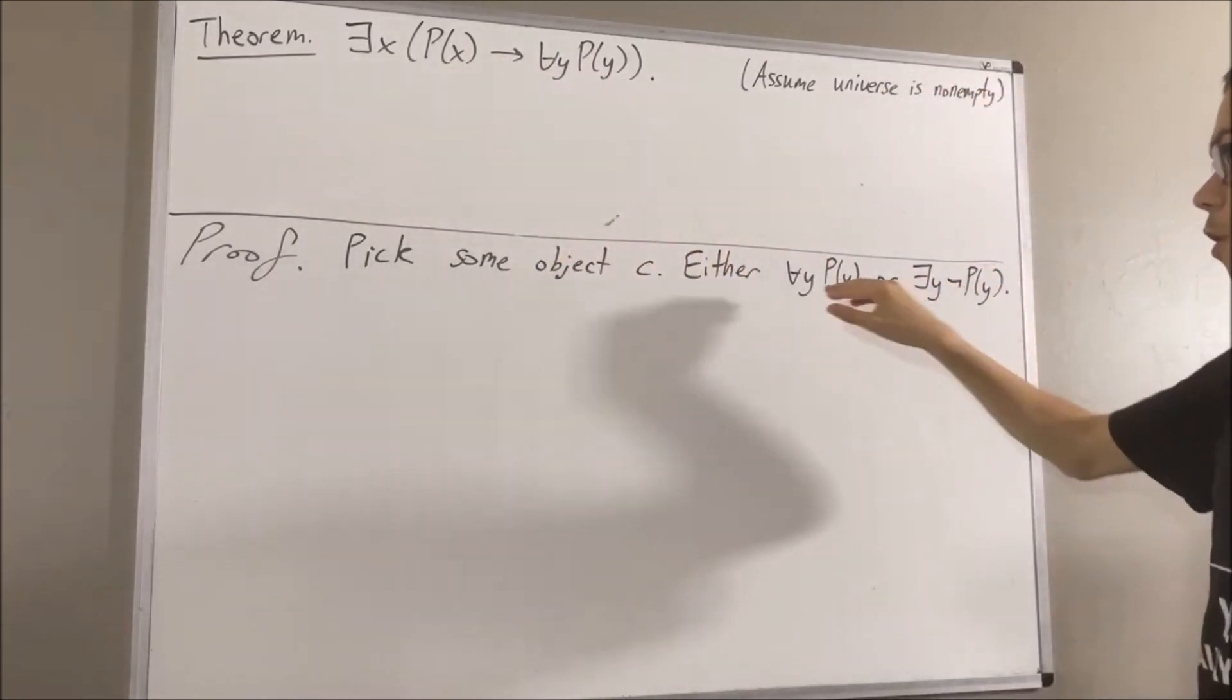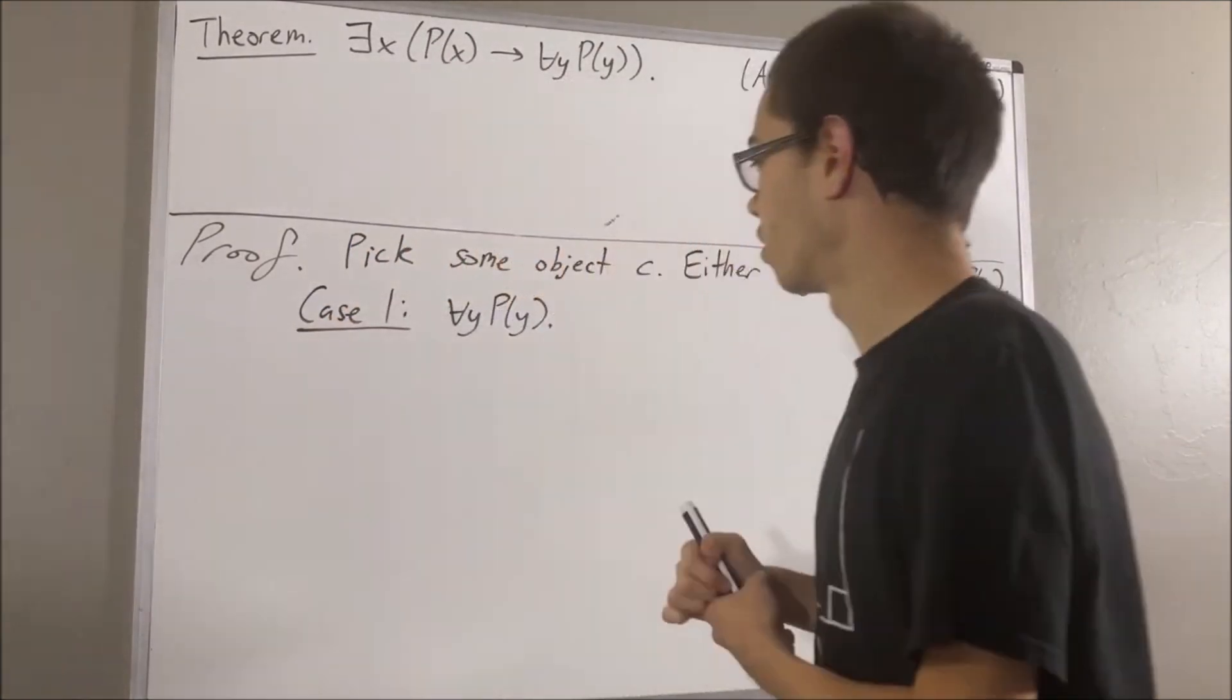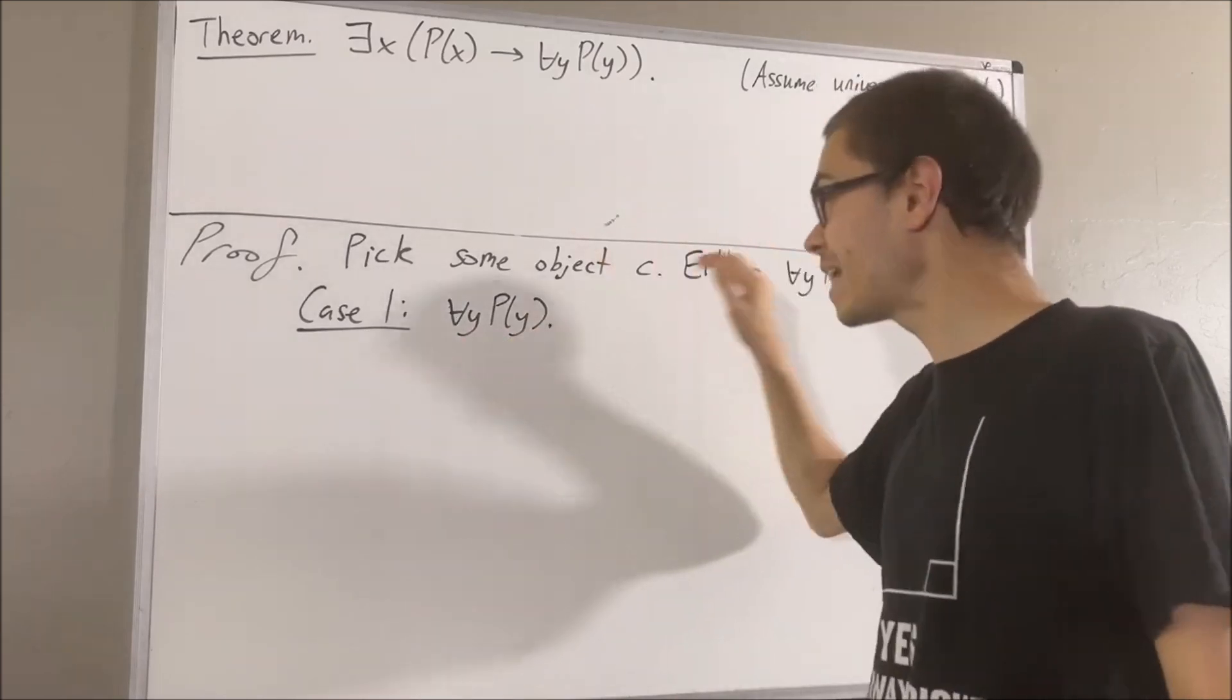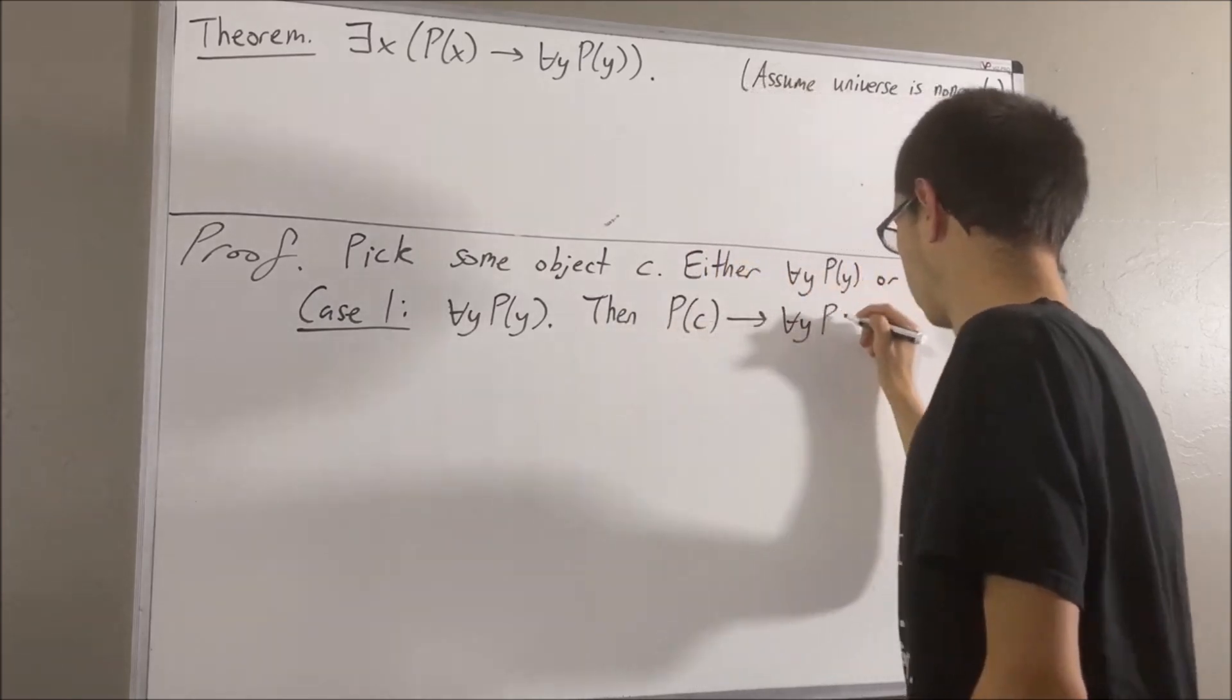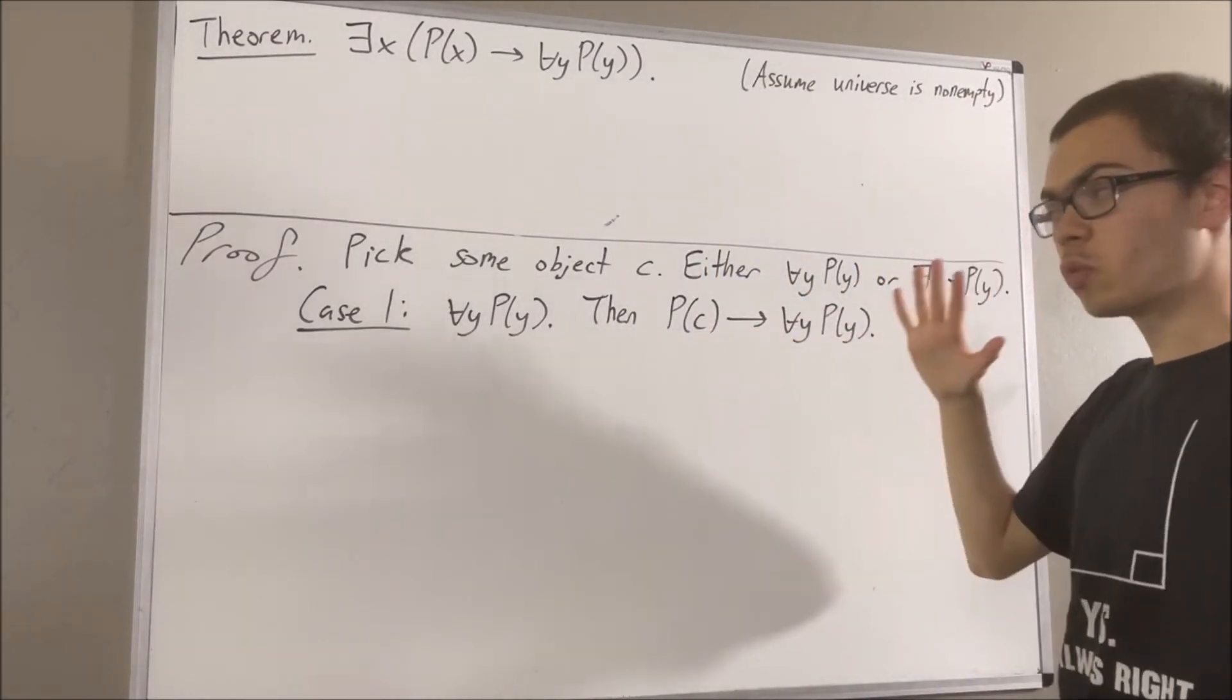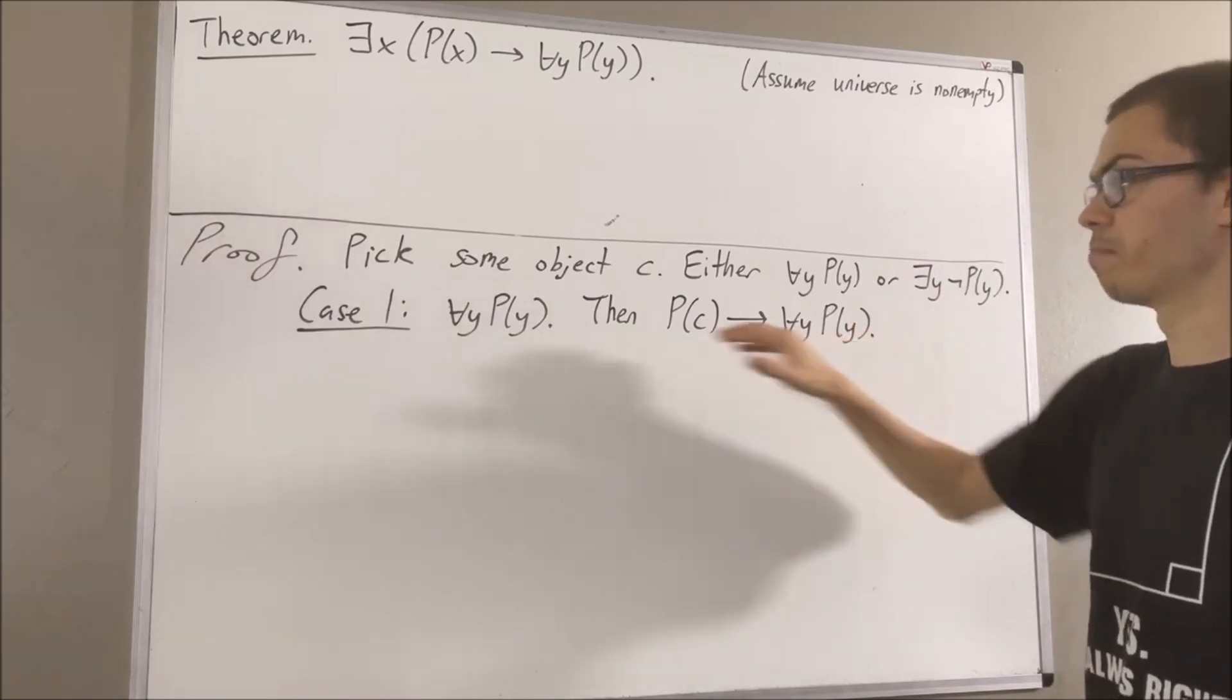Let's start with case 1, where for all Y, P of Y. Well, since this is true, it follows that if P of C is true, then this is true. We know that this is going to be true because the consequent of this conditional is true.